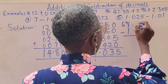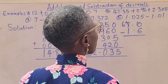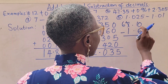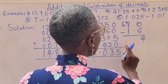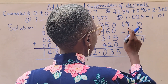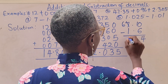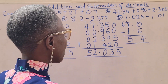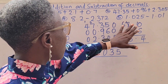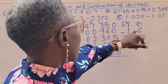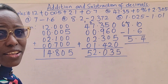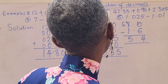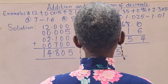I borrow one from the units column, leaving 6 there. So 10 minus 6 is 4. Then 6 minus 1 is 5. You can see that 7.0 minus 1.6 equals 5.4. Then I move to the next subtraction example.